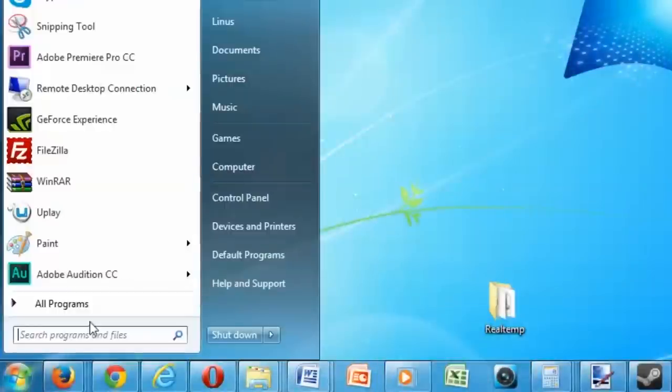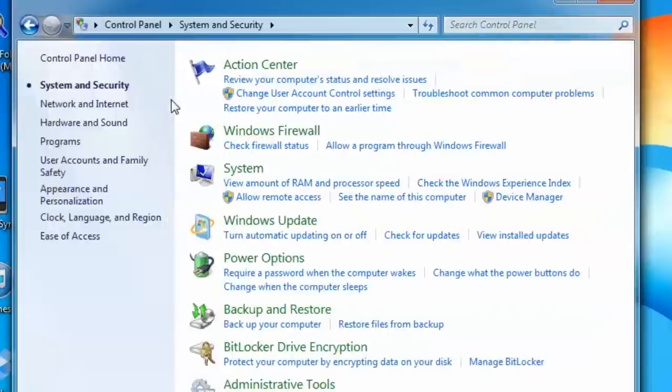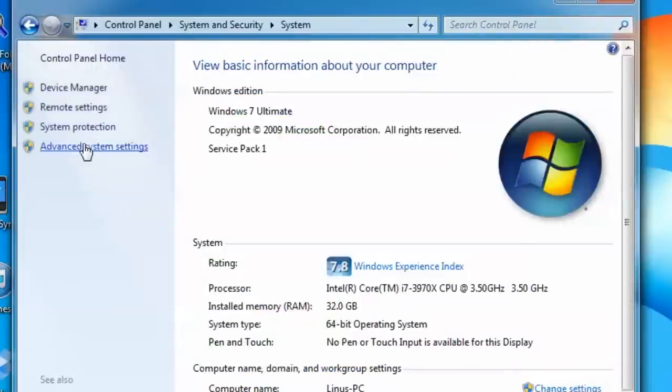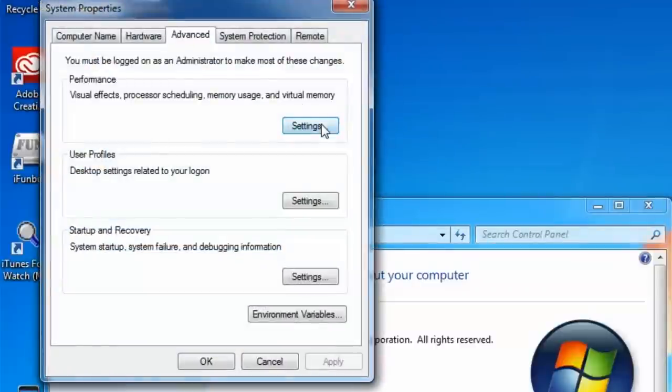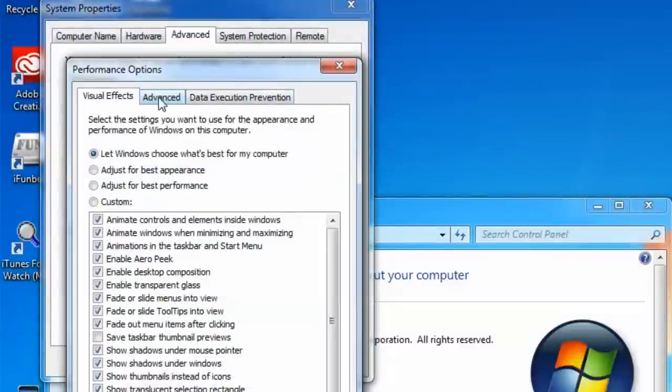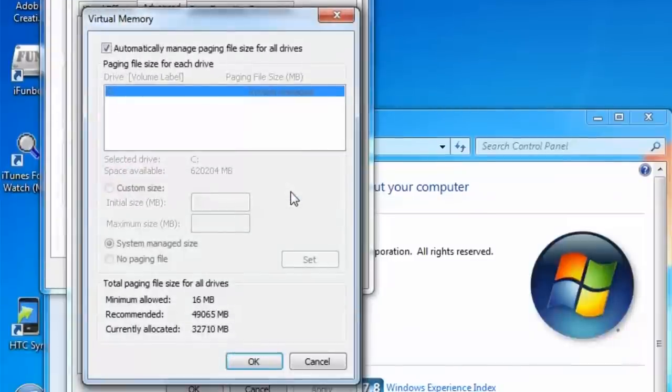To access the settings for your page file, open up the control panel, go to system and security, then system, then advanced system settings, then the advanced tab, then the settings button under performance, then the advanced tab, and finally, the change button under virtual memory.